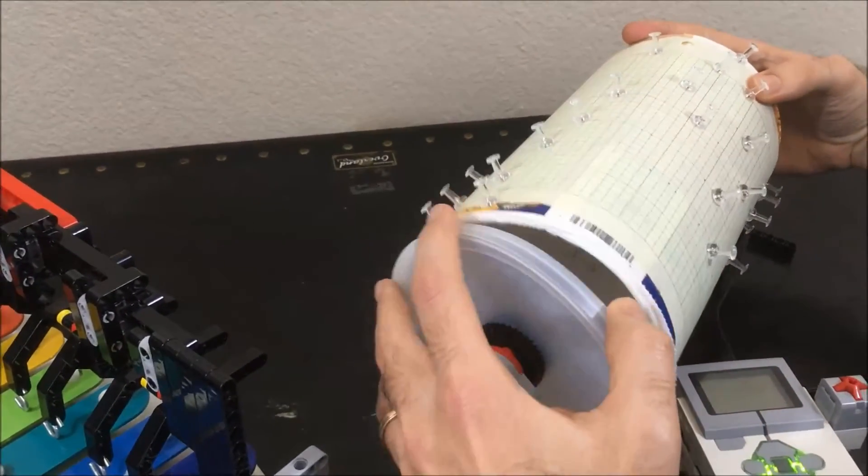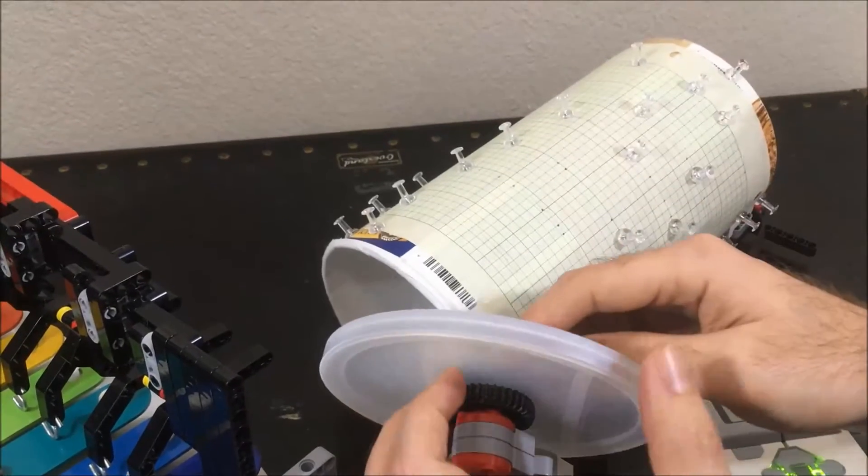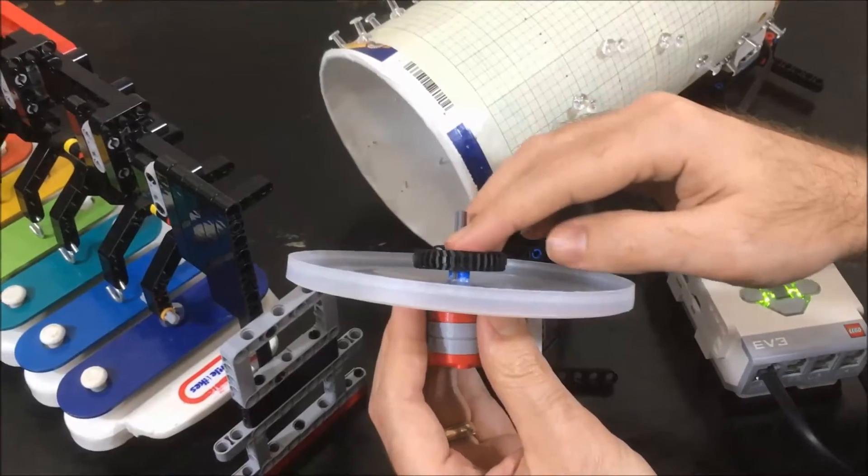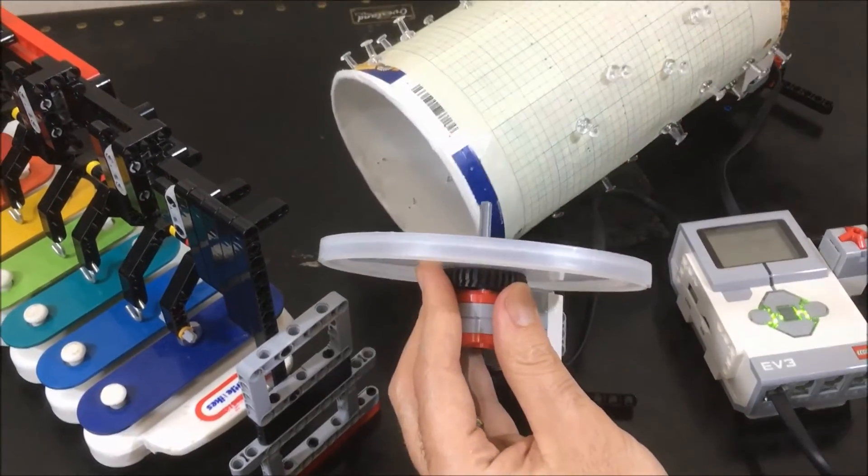Now if we look inside the oatmeal container you can see that there's a second gear along with connectors to firmly hold each end of the drum in place.